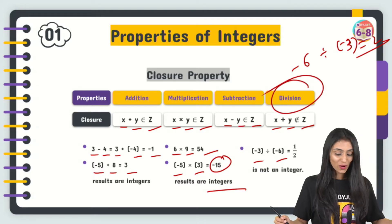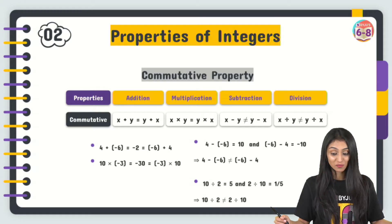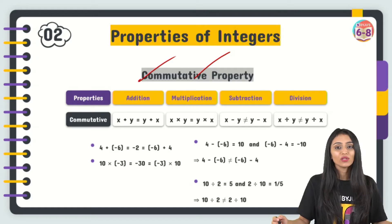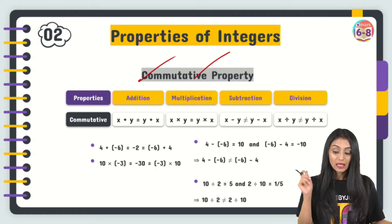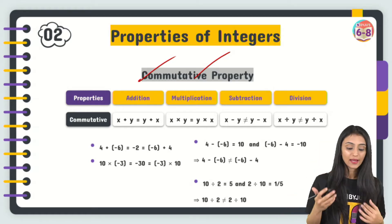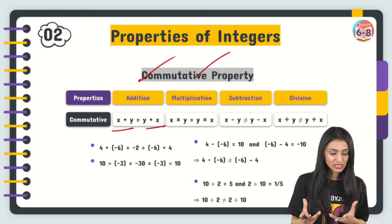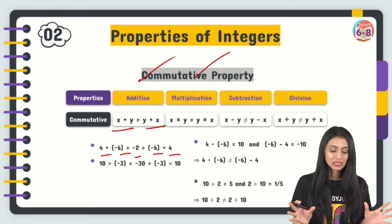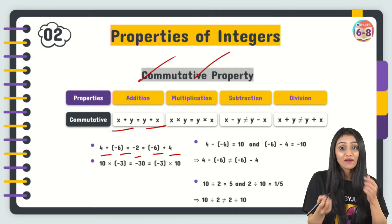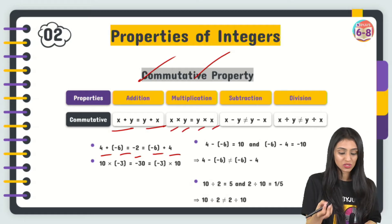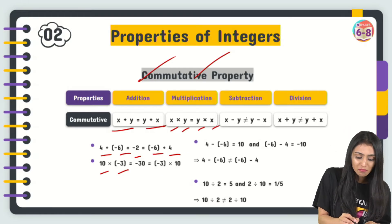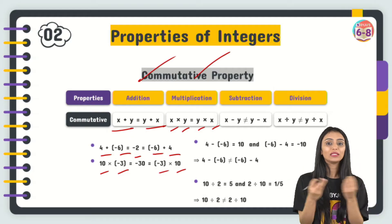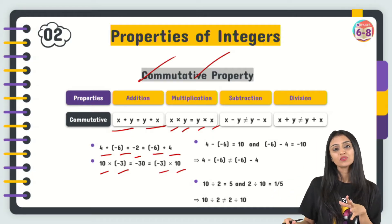Commutative property of addition and multiplication states that the order of terms doesn't matter — the result will always be the same. For addition: x + y = y + x. Example: 4 + (−6) = −2 and (−6) + 4 = −2, same result. For multiplication: x × y = y × x. Example: 10 × (−3) = −30 and (−3) × 10 = −30. Swapping terms does not change the result.